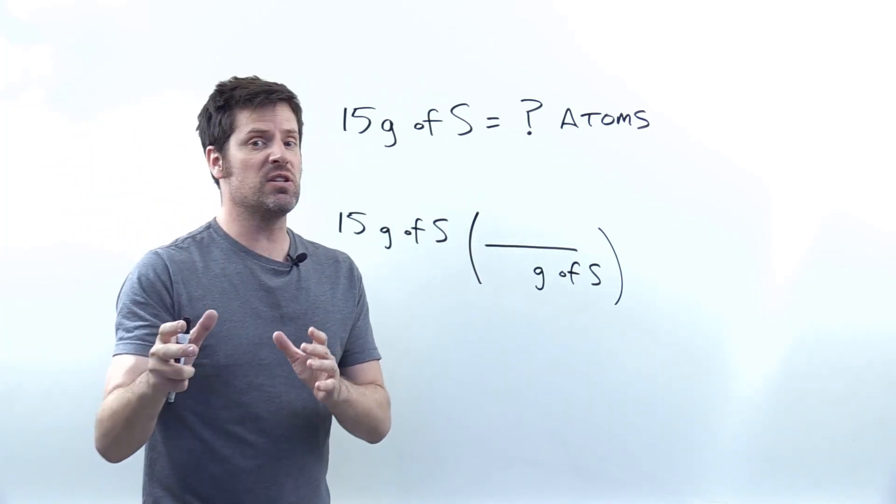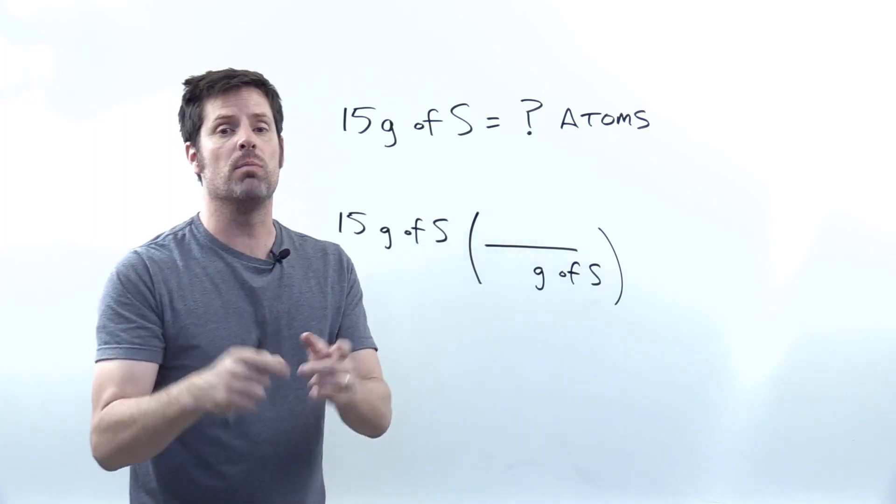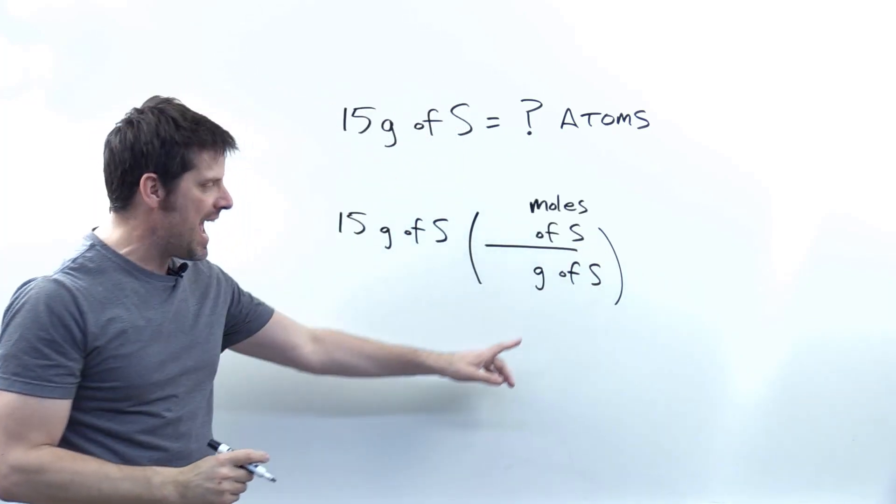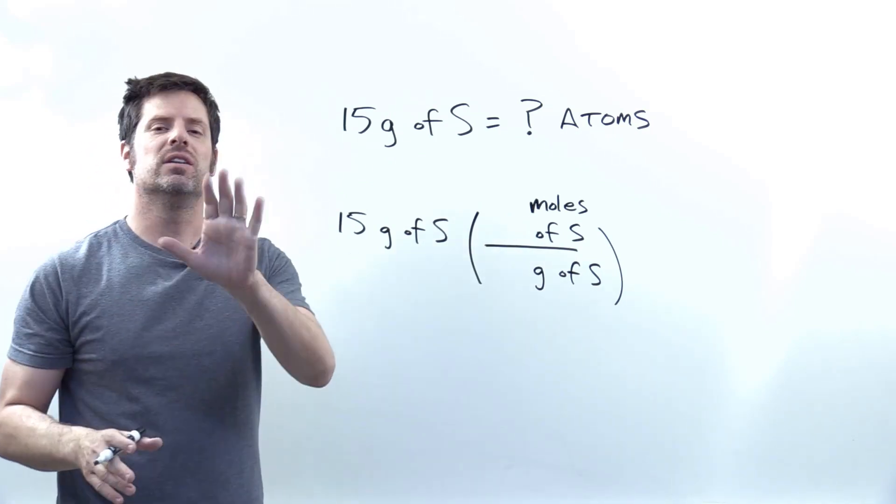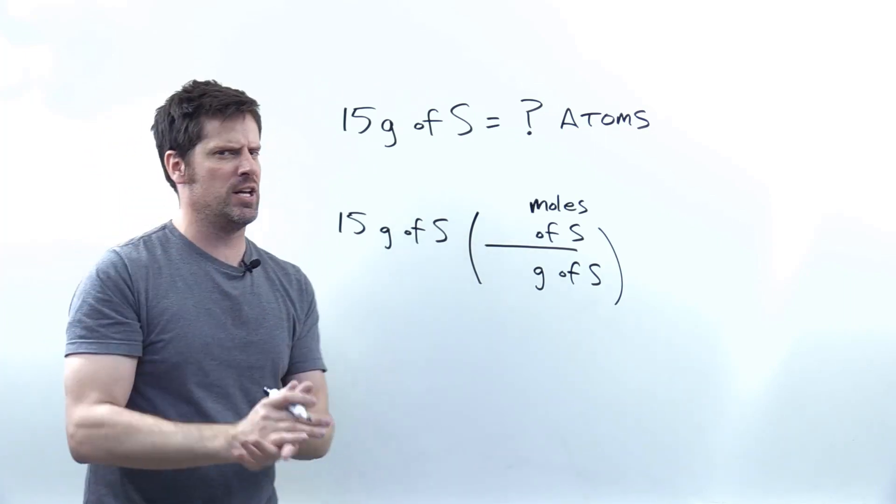Oftentimes we relate grams of one thing to moles of that same thing using its atomic or molecular weight. In other words, I can relate numerically grams of sulfur to moles of sulfur. Does that get me to individual atoms? Not quite yet. So I'm going to have to lay down another set of parentheses.